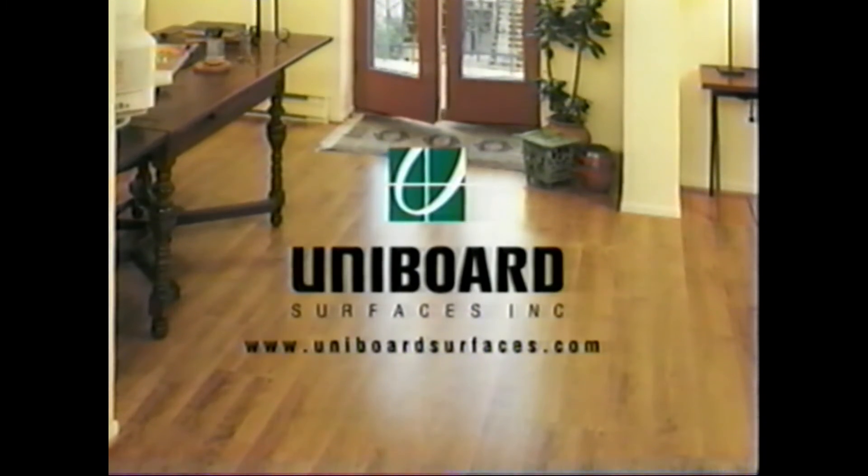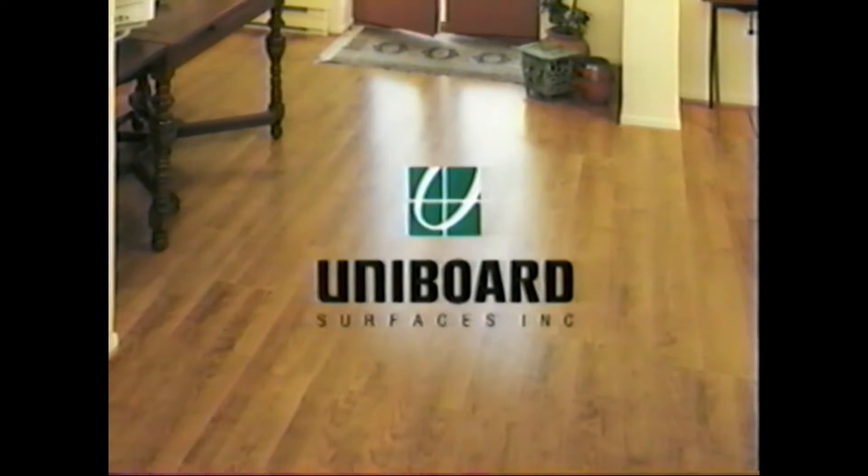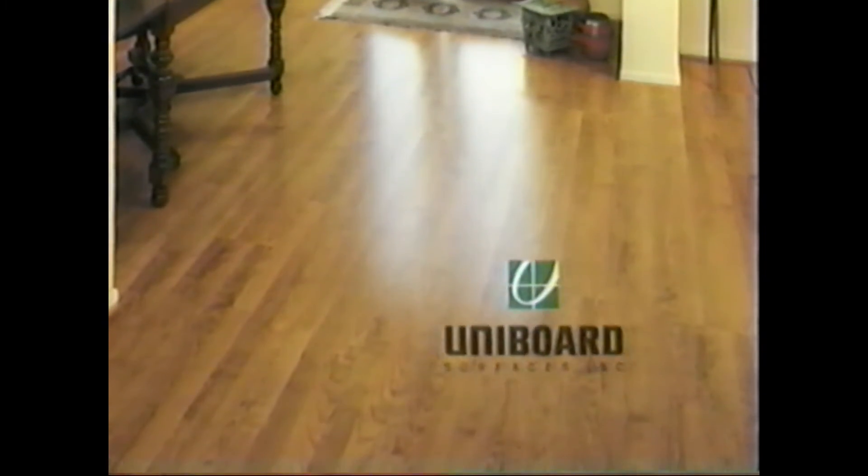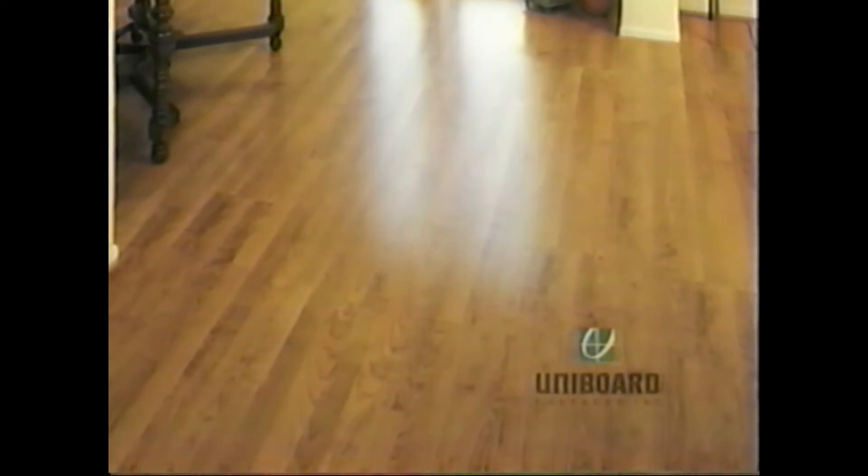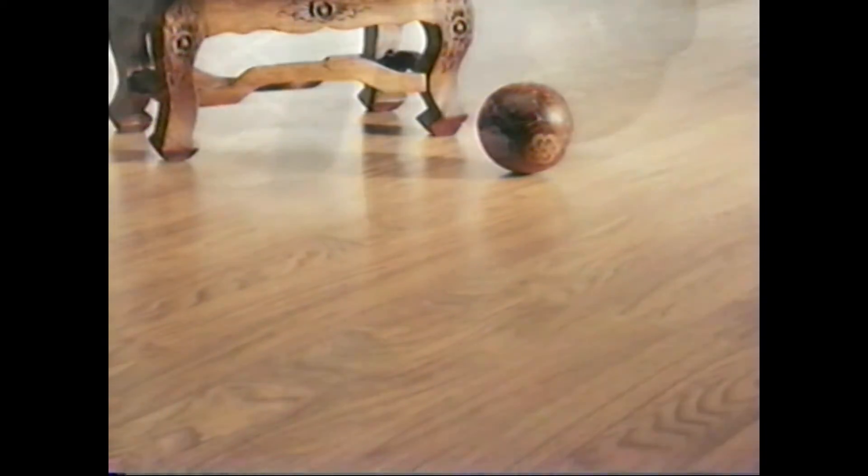The Uniboard glueless system has a unique double locking mechanism. The advantages are tighter seams than most glueless laminate flooring systems. The flooring may be installed with or without glue. Consult the packaging for applications.